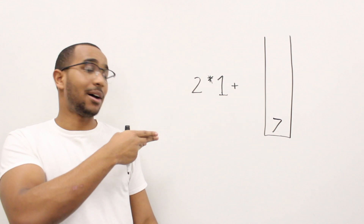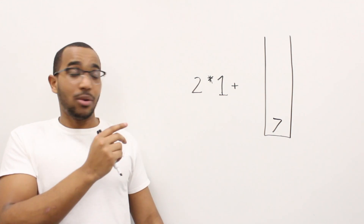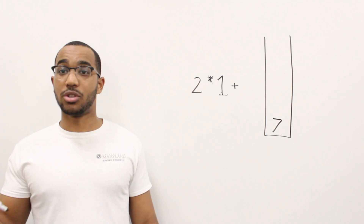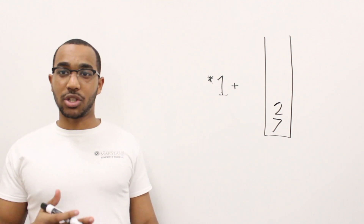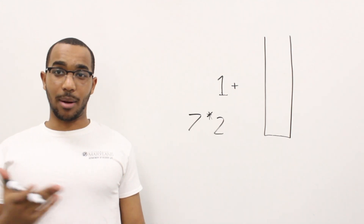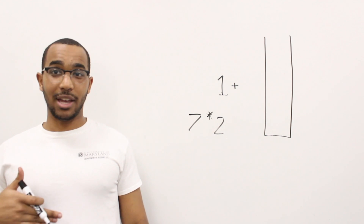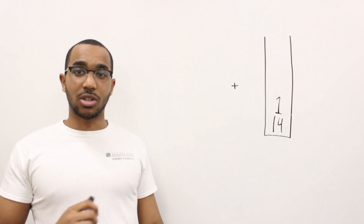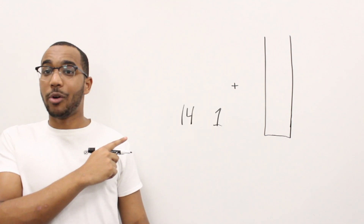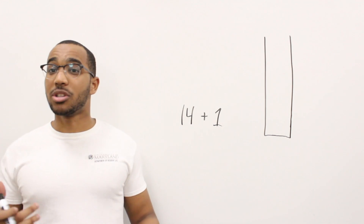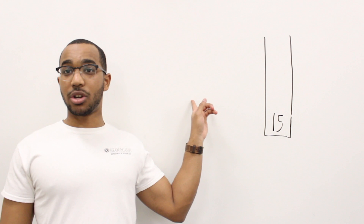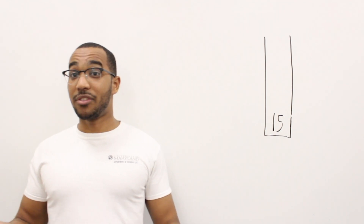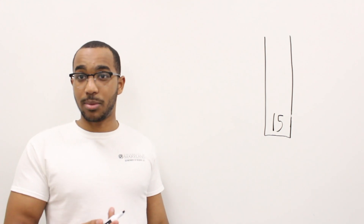All we're doing is formalizing what we were doing before into a data structure. We have seven on the stack. The two is an operand, so we push the two. Now we have a multiplication symbol — pull both items out and apply the operation: seven times two is 14. Then we see the operand one — push it. We see a plus sign, pop two items, apply the operator, and get 15, then push that on the stack. We ran out of elements, so we pop the final item: our result is 15.